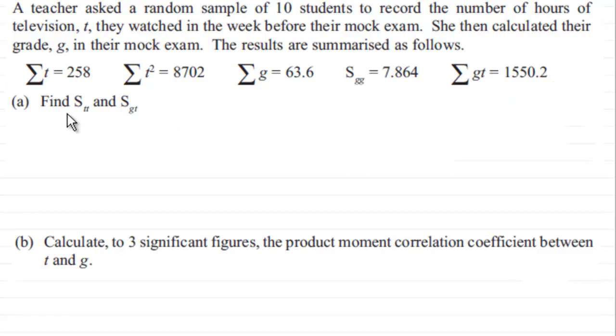And we've got to find stt and sgt. And then in part b we've got to go on to calculate to three significant figures the product moment correlation coefficient between t and g.